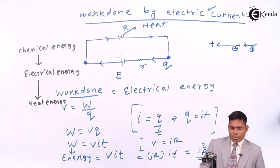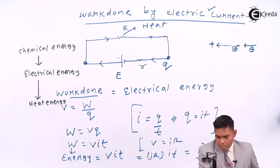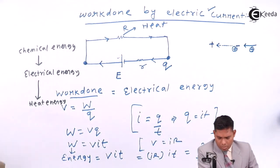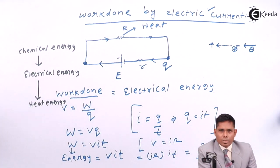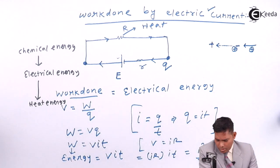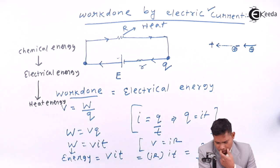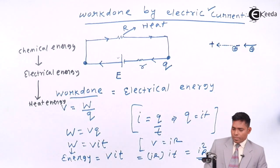This is how the energy is converted. The electric current work equals the heat that is produced. Heat energy produced is V I T or I square R T.